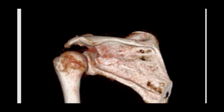The infraspinatus originates from the infraspinous fossa and occupies most of the space there. It courses underneath the spine and above the joint, and then inserts on the greater tubercle on the middle facet.